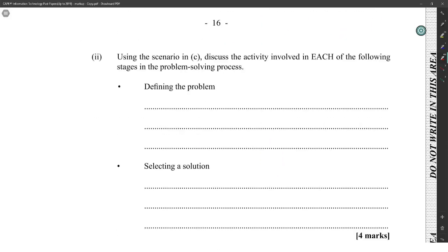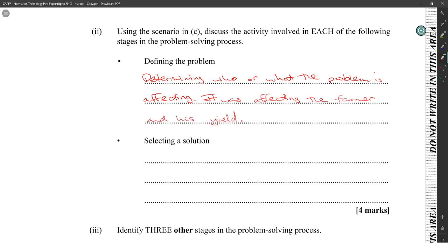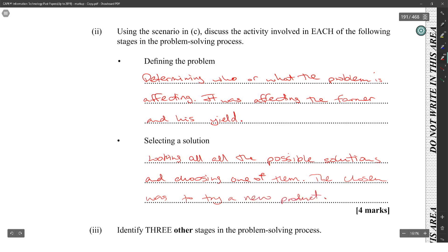Selecting a solution is looking at all the possible solutions and then choosing one of them. The one chosen was to try a new product. That's pretty easy because you're not too sure exactly what they want, but that's basically what you should answer.